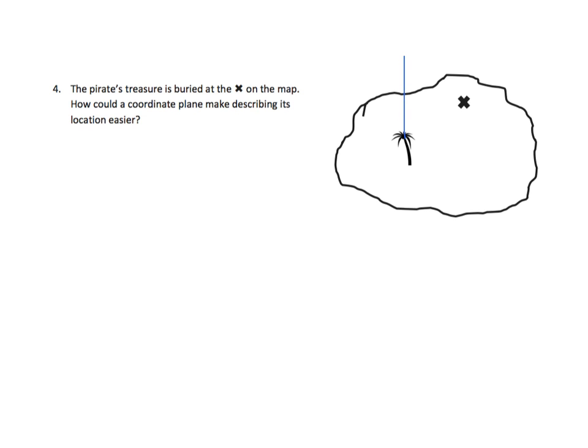One of the ideas here is we could kind of make the palm tree the origin. And we can just say one, two, four. One, two, three. We could say that the treasure is at two, comma, three, represented by our coordinate plane right here. It would make it quite a bit easier.